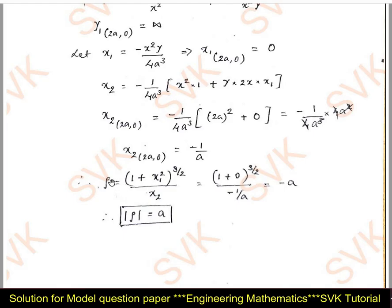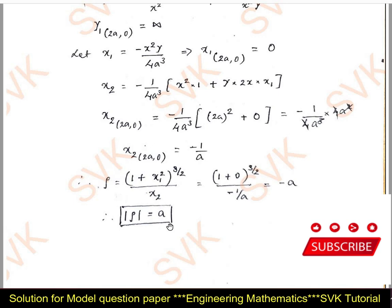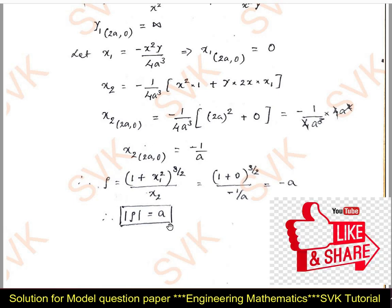We know the formula for radius of curvature is ρ = (1 + x₁²)^(3/2)/x₂. If the problem has y₁ and y₂, the formula is (1 + y₁²)^(3/2)/y₂. Substituting x₁ = 0 and x₂ = −1/a, the radius of curvature is a. This is the required solution. This concludes the solution for module 1 of question paper set 1. If you have any doubts, put a comment. If you liked this video, kindly subscribe to my YouTube channel and press the like button. Thank you all.